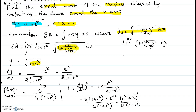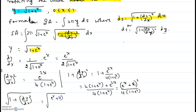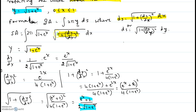In the formula we take the square root of 1 plus (dy/dx)². Taking the square root of (e to the x plus 2)² over 4 times (1 plus e to the x) gives (e to the x plus 2) divided by 2 times the square root of (1 plus e to the x). That is the simplified ds expression.